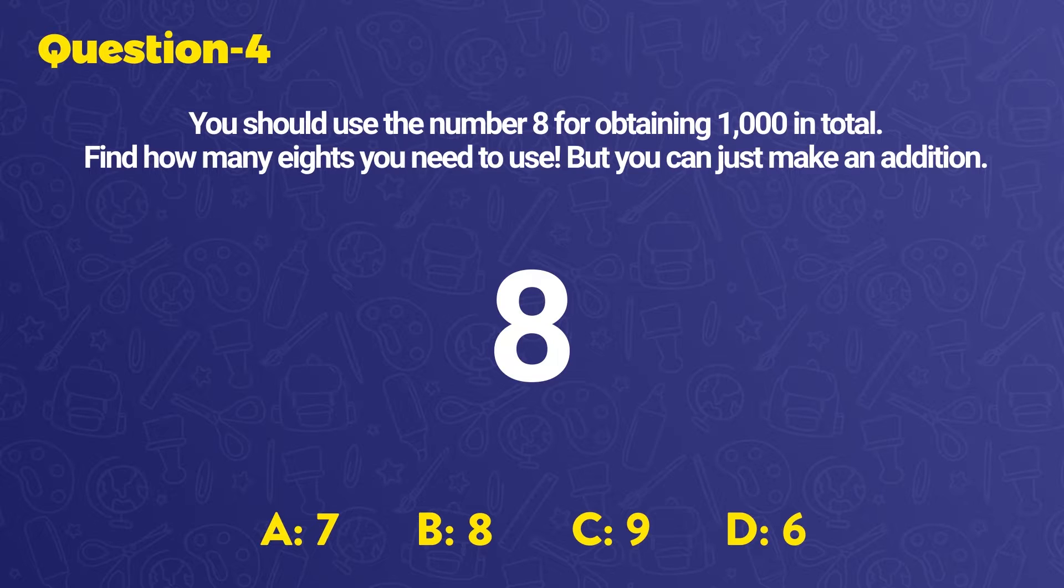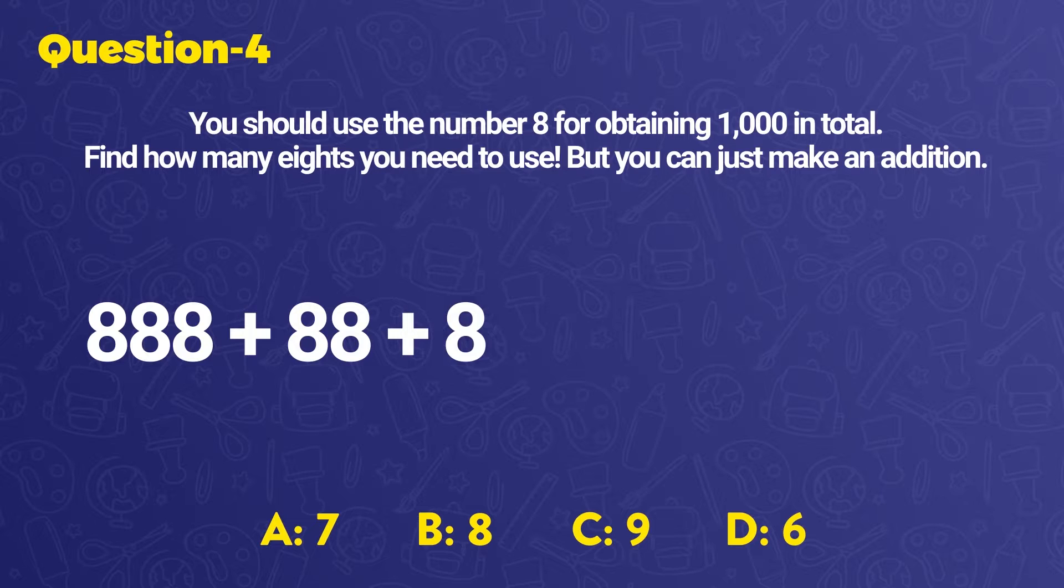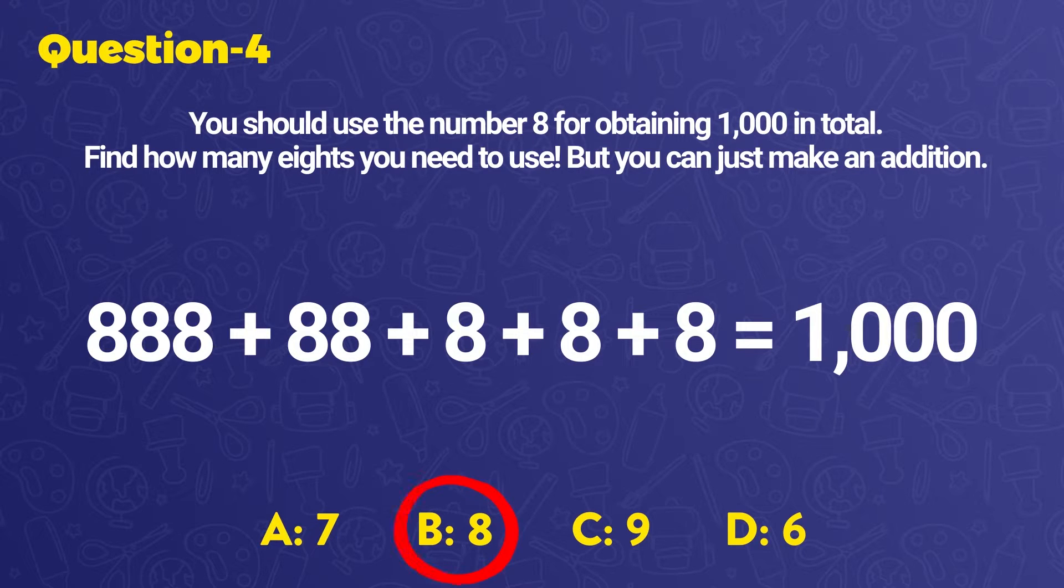Let's start to calculate. When we make the addition operation of 888 plus 88 plus 8 plus 8 plus 8, we get 1000. To do this, we use 8 pieces of 8. The right answer is B.